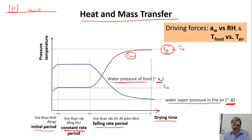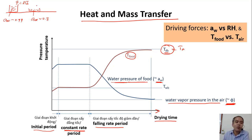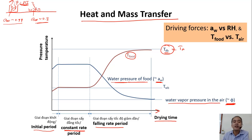Consider fresh milk left on a table overnight — its weight reduces, because the water activity of fresh milk is almost 1 (about 0.99), while relative humidity of air may be 85%. For dry milk powder, water activity may be 0.3 to 0.4. Water activity in fresh milk is higher than the relative humidity, so water evaporates. For milk powder, vapor from the air is absorbed into it, so it gains weight.